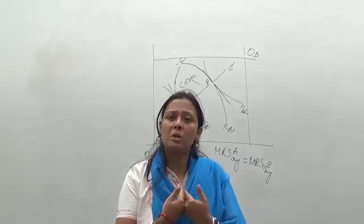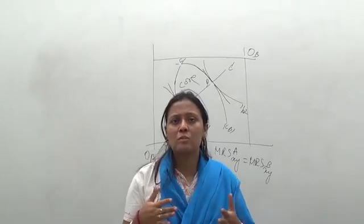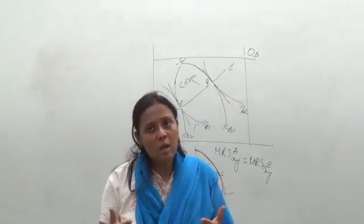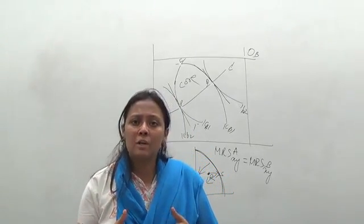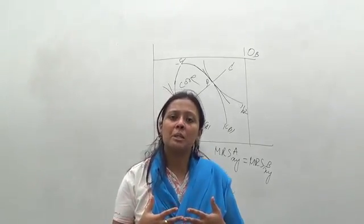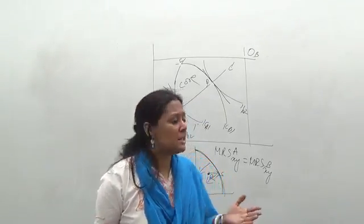So in the intersection, in the tangency point of these two indifference curves together, it shows that the marginal rate of substitution of these two goods of both individuals is equal to each other. And so this is the point of welfare economics, or which is considered to be the Pareto optimal point, in which it is not possible to improve further.